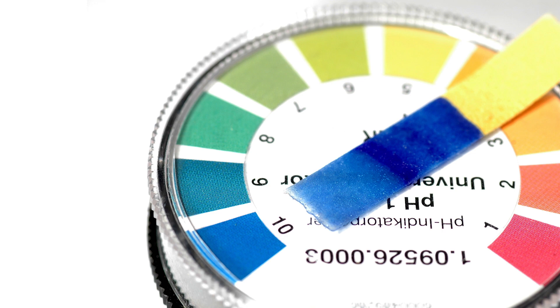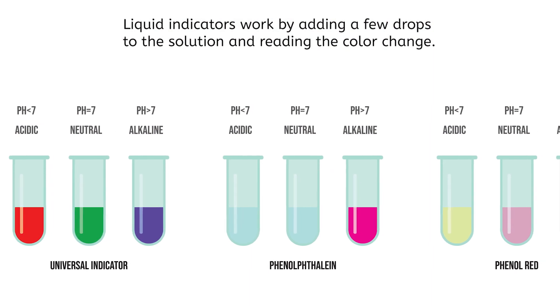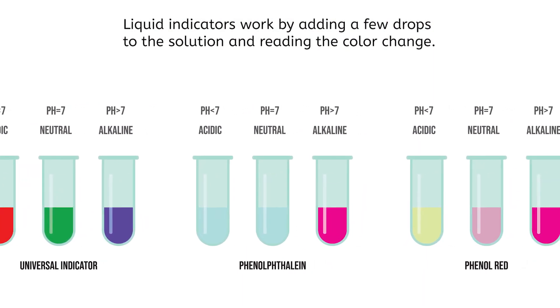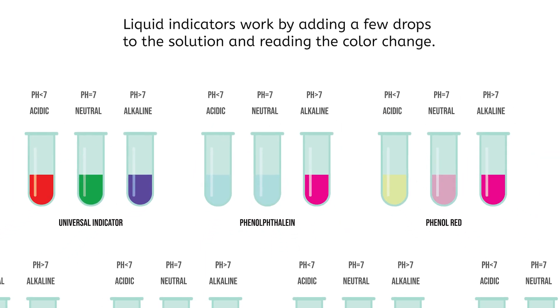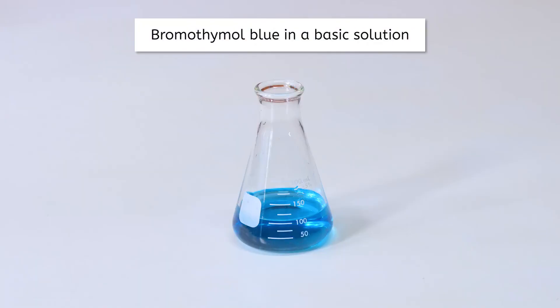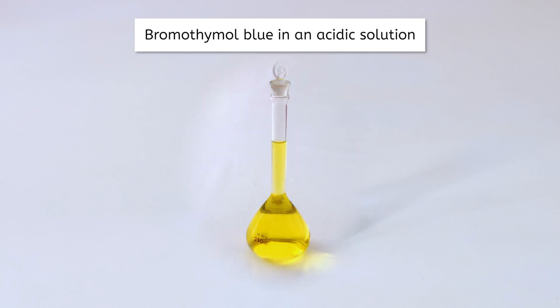Bromothymol blue is a liquid indicator. Liquid indicators work by adding a few drops to the solution and reading the color change. Each liquid indicator works with a different color change and different ranges of pH. But for bromothymol blue, if you add a few drops to a basic solution, the solution turns blue. However, if you add a few drops of bromothymol blue indicator to an acidic solution, the solution turns yellow.